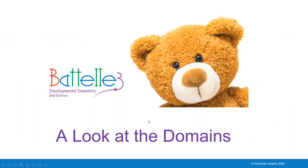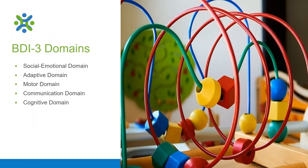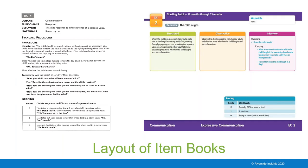Looking at each of the domains in the developmental complete test — social, emotional, adaptive, motor, communication, and cognitive — they each have their own books. You can see the difference on the inside of the books. On the left is BDI-2, which blends together in black and white, whereas the BDI-3 is bright, colorful, and easy to navigate. The layout has changed significantly.